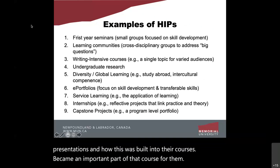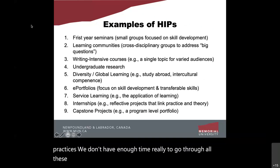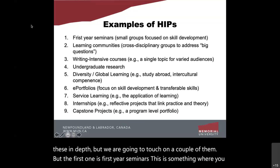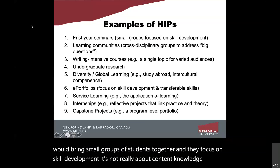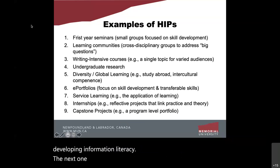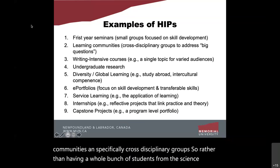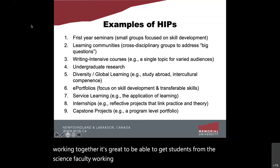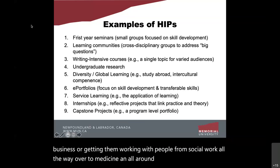Here are some examples of high-impact practices. First-year seminars bring small groups of students together to focus on skill development — not content knowledge, but skills like critical thinking or information literacy. Learning communities involve cross-disciplinary groups: rather than all science students working together, it's great to bring students from science, business, social work, medicine all together — people with different knowledge backgrounds.